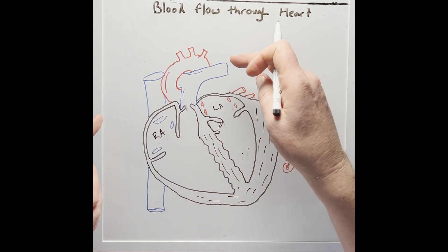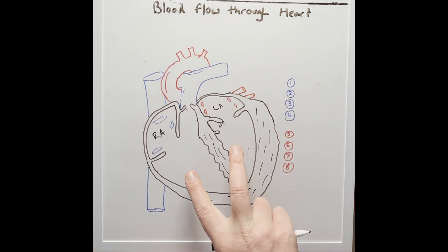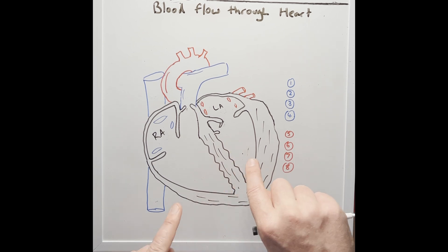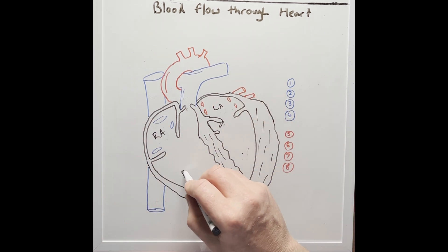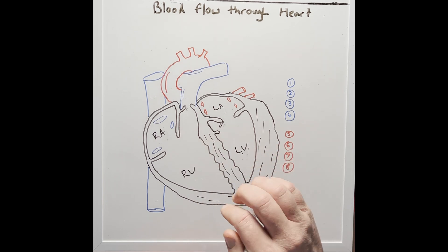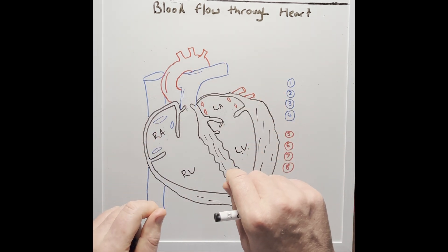Now remember, veins bring blood to the heart. And we have two inferior chambers that push or pump blood out of the heart. These are the right ventricle and the left ventricle. Remember, arteries take blood away from the heart.